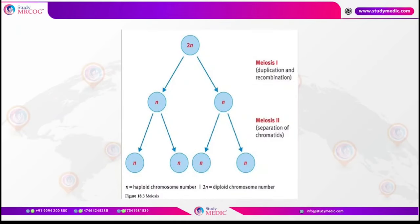Meiosis is reduction division, where a single parent cell containing the diploid number of chromosomes gives rise to four daughter cells each containing the haploid number. Meiosis occurs in two steps. In meiosis 1, the reduction division occurs: the parent diploid cell gives rise to two haploid daughter cells. In meiosis 2, each of these two daughter cells gives rise to two more daughter cells, so at the end of meiosis we have four haploid daughter cells.